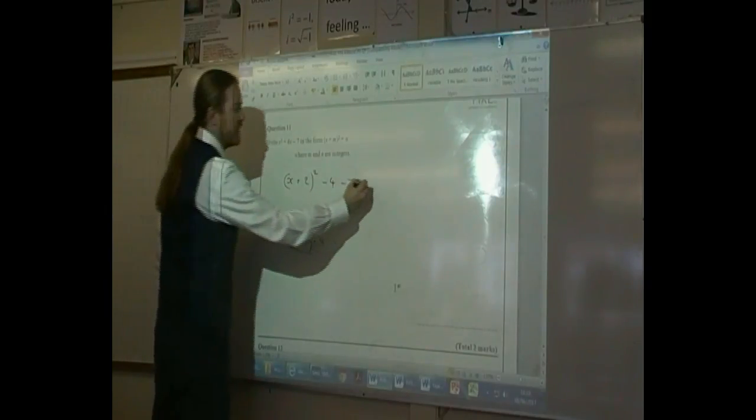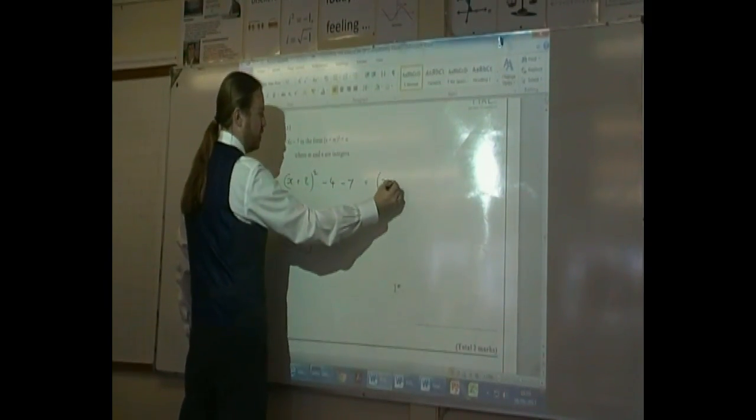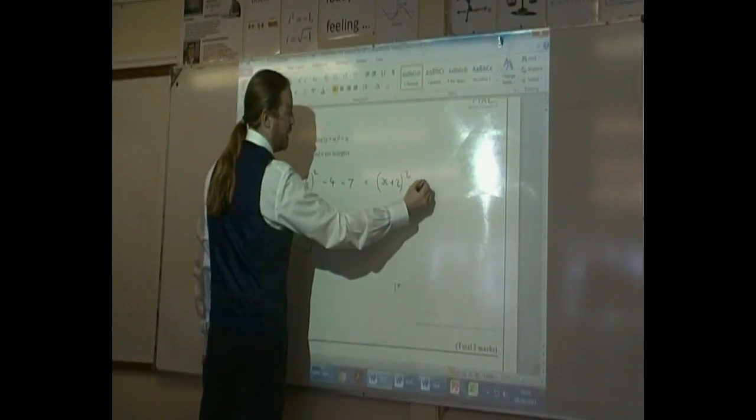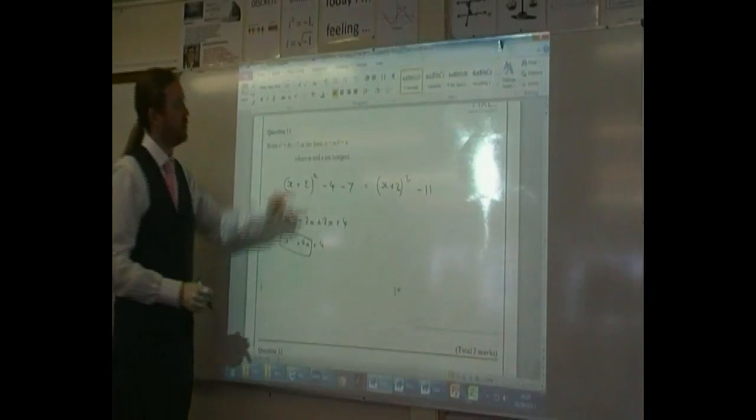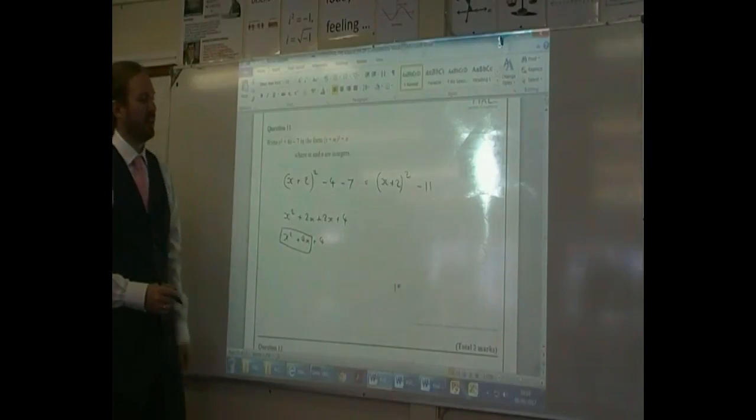So when we simplify that, we have x plus 2 squared minus 11. So m is 2 and n is minus 11.